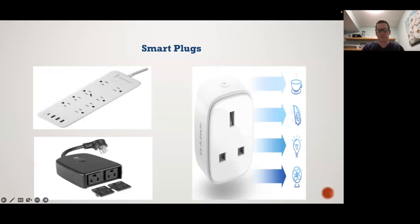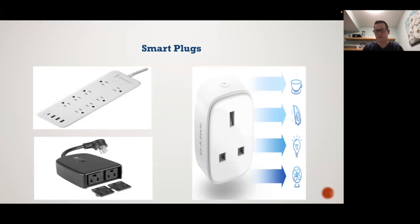You control each switch individually. On the bottom left is an outdoor plug — I plug in my Christmas lights and it's waterproof, so I can turn them on and off from outside without having to go out and do it. It can all be done by voice, and I can even set timers — I set a timer for the lights to come on and off at certain times. It's all done through these smart plugs, which is very handy.